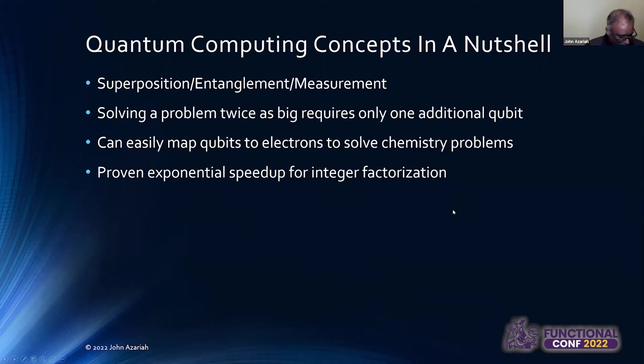Similarly, we also have a provably fast exponential speedup for intensive factorization. This is the one sort of like core algorithm that everybody knows, the Shor's algorithm. It basically proves that you can, in polynomial time, actually factorize an integer. So, this vastly improves the amount of time it takes to actually do integer factorization.